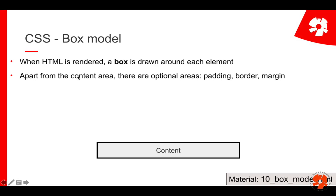When a browser renders HTML, when it draws it, what it does is draw a box around each element. You have already seen that when, for example, a background color is given to a div or a text element, it was basically a rectangular box. You have the content area itself — so if you have a paragraph, that's just the area of your text — but then there are optional areas around it, and you need to understand these in order to do the right layout.